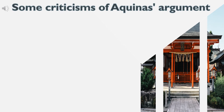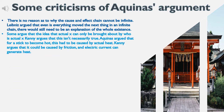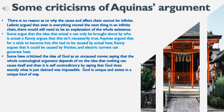Some criticisms of Aquinas's argument: there is no reason why the cause-and-effect chain cannot be infinite. Leibniz argued that even if everything moved the next thing in an infinite chain, there would still need to be an explanation of the whole existence. Some argue that the idea that actual X can only be brought about by something that is actual X is not necessarily true — Kenny argues that for a stick to become hot, this had to be caused by actual heat, but it could also be caused by friction, and an electric current can generate heat. Some have criticized the idea of God as an uncaused mover, saying the cosmological argument depends on the idea that nothing can cause itself, and then it is self-contradictory by claiming that God does exactly what it just said was impossible.